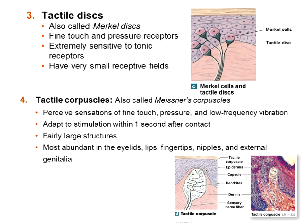Tactile discs are free nerve endings with small extensions to their dendritic surfaces. They push into the basement membrane of the epidermis and into specialized epithelial cells called Merkel cells — attaching to tactile discs known as Merkel discs. Fine touch and pressure, because these are located close to the surface in the epidermis, give small receptive fields and tonic adaptation — allowing you to continuously feel fine touch and pressure in the fingers, toes, lips, and genitalia.